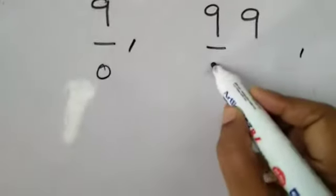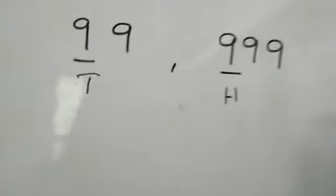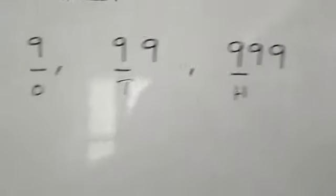So this place value is 1s. Next this one, 10s. And this one, 100s. Do you understand?